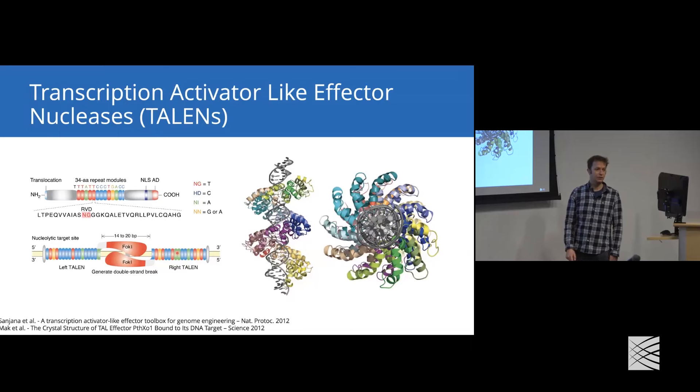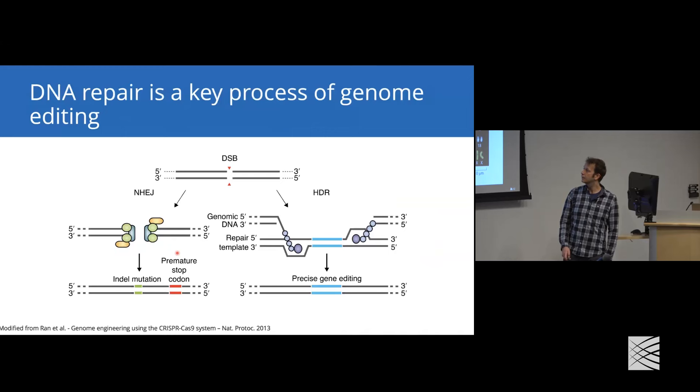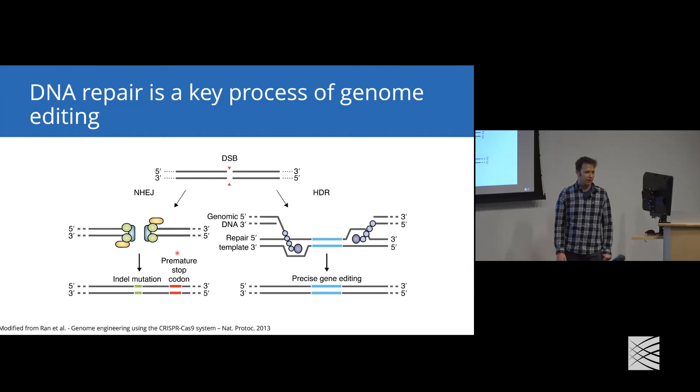There's a question online about HDR. Is it sufficient to have non-endogenous template? Do we want to ensure it's functional? Yes, you can trick the cell into using exogenous templates for the repair process. It's slightly unclear how much exogenous template you would need to get the template in the right place at the right time. There are tricks that people have used to localize these templates at regions of double-strand breaks.